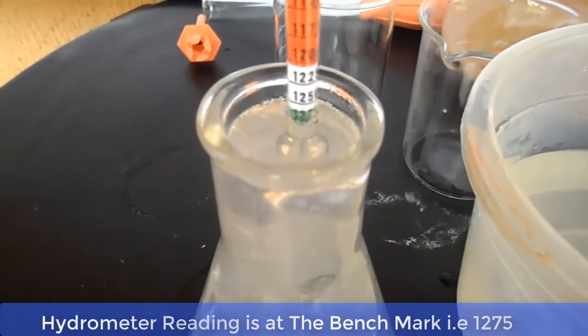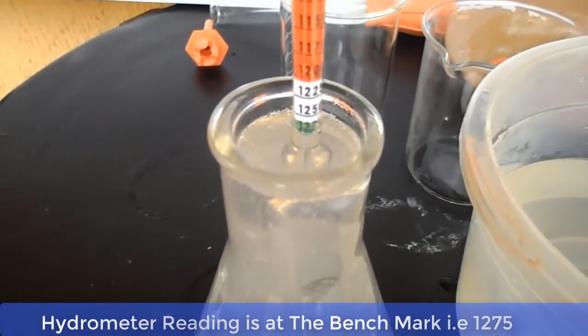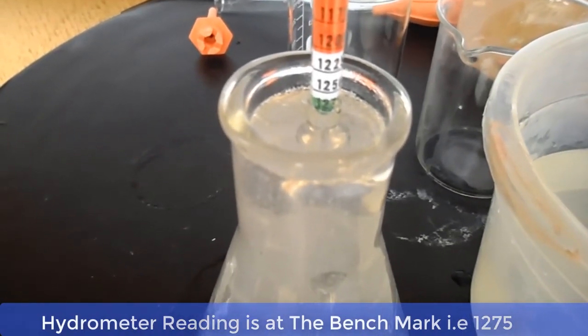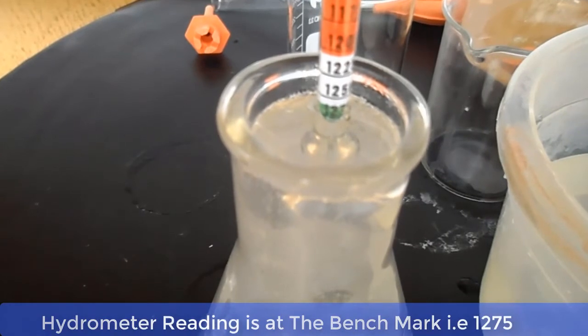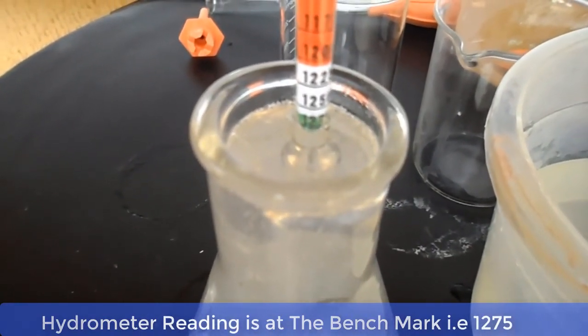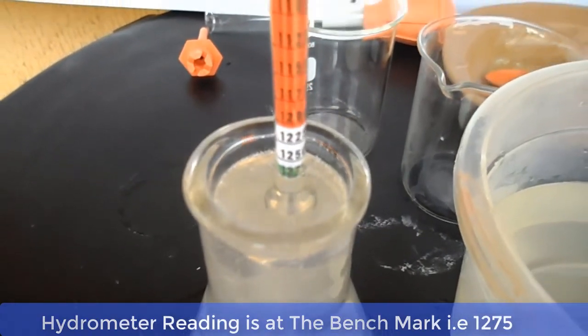This is what you do in order to arrive at your benchmark of 1275 of the hydrometer reading. The bar soap made with the lye solution whose specific gravity is 1275 is safe for the user and it is going to be hard and durable.